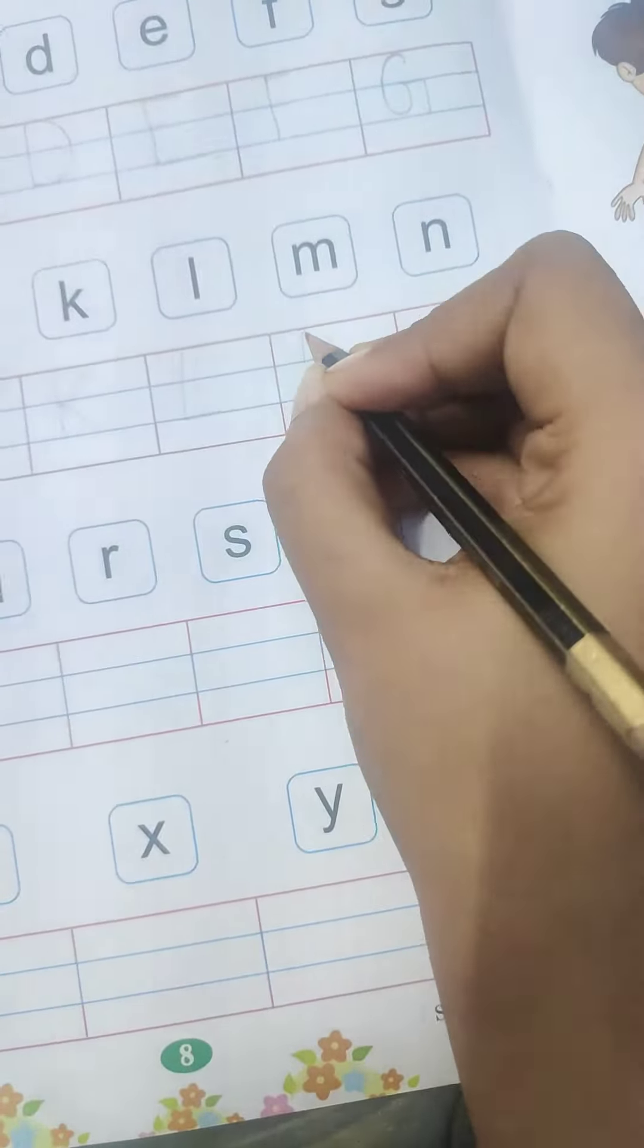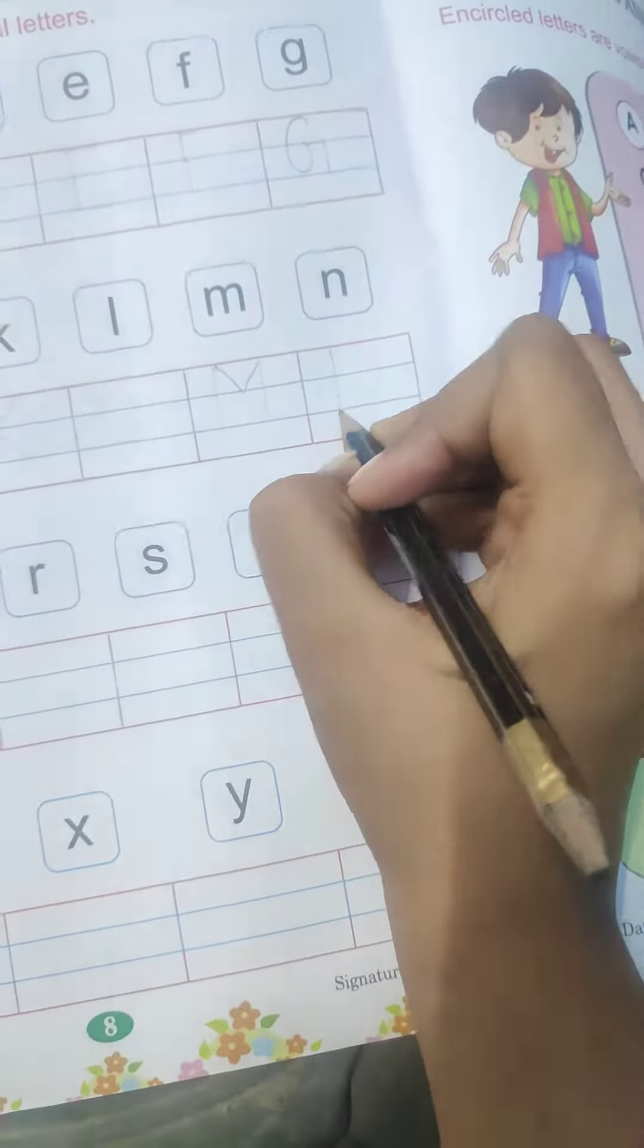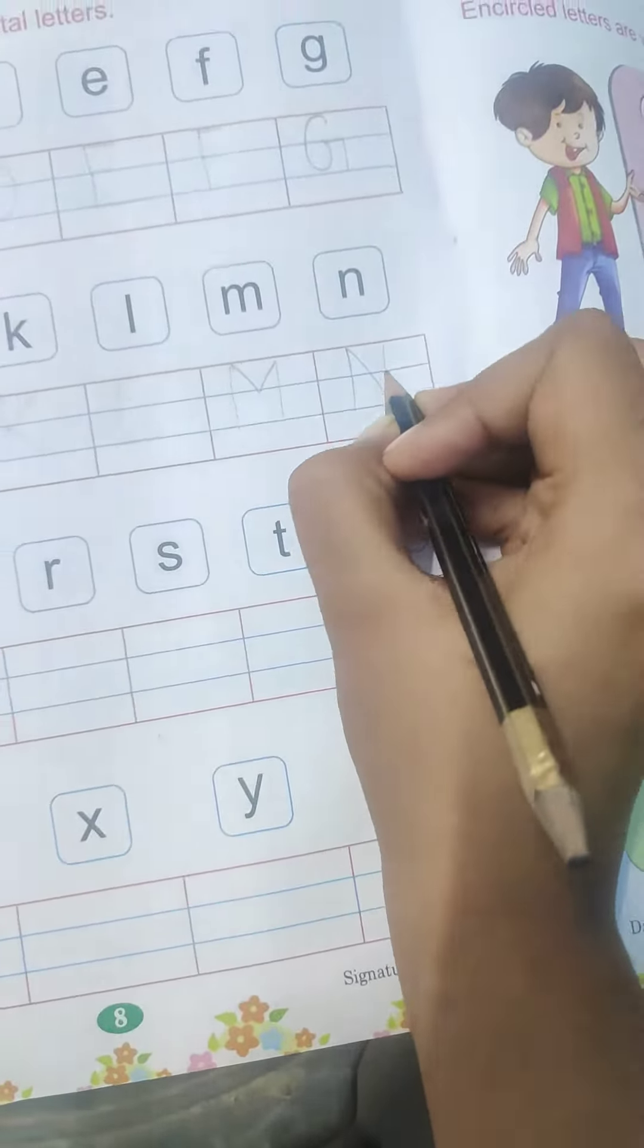M. M for Monday. N. N for nest. O. O for orange.